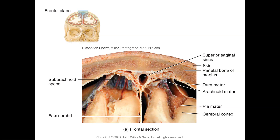The space between the arachnoid and pia mater is the subarachnoid space. In trauma, patients can get an epidural, subdural, subarachnoid, or cerebral hematoma — the name indicates where the blood has collected. In this figure: on top is the scalp, below is the parietal bone, then the dura mater with its periosteal layer, then the arachnoid mater, then the subarachnoid space with arachnoid villi, the superior sagittal sinus, and the pia mater tightly adherent to the cerebral cortex.